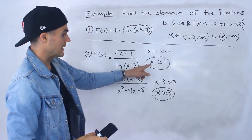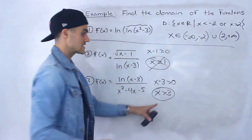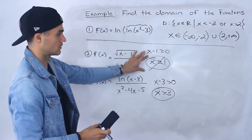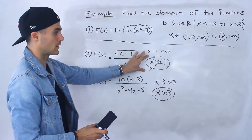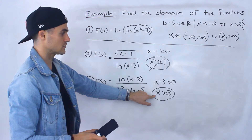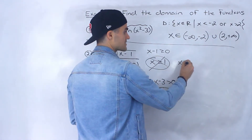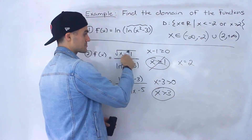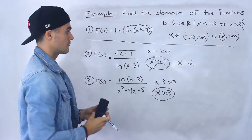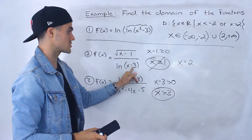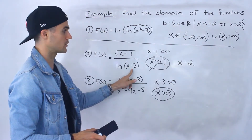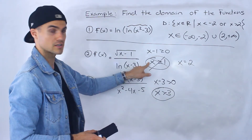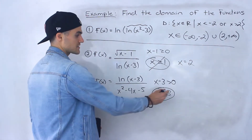Combining these restrictions, we can forget about the x greater than or equal to one condition because the x greater than three condition is more restrictive. All x values greater than three automatically satisfy x greater than or equal to one. For example, x equals two is greater than or equal to one — the square root works fine — but plugging in two gives two minus three which is negative one, and we can't take ln of a negative number. So x greater than three is the binding restriction.